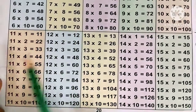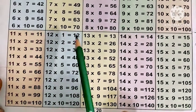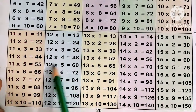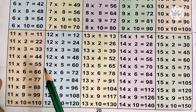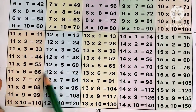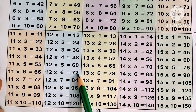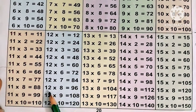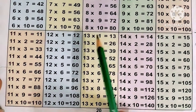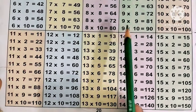Now the 12 times table. 12 ones are 12, 12 twos are 24, 12 threes are 36, 12 fours are 48, 12 fives are 60, 12 sixes are 72, 12 sevens are 84, 12 eights are 96, 12 nines are 108, 12 tens are 120.